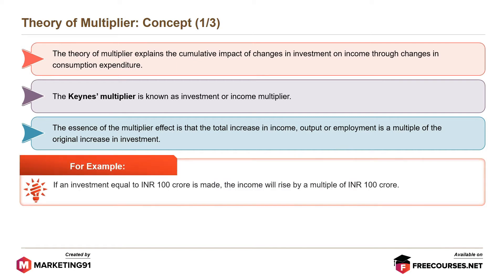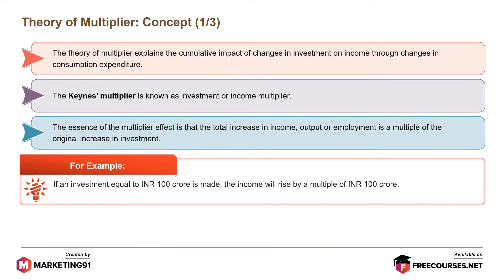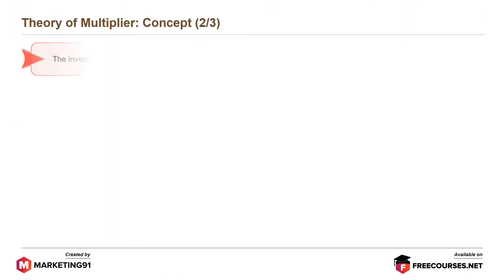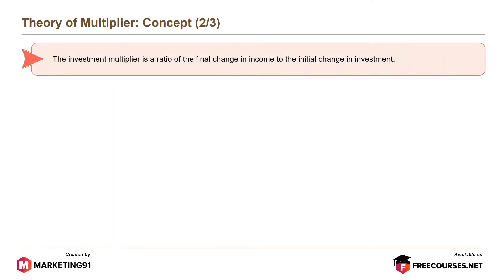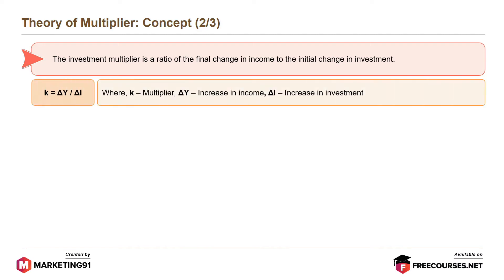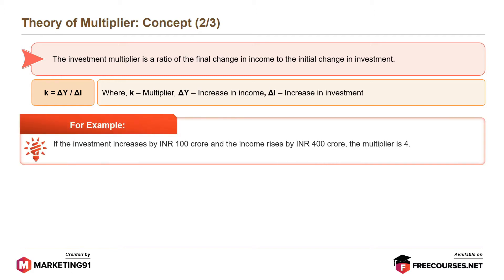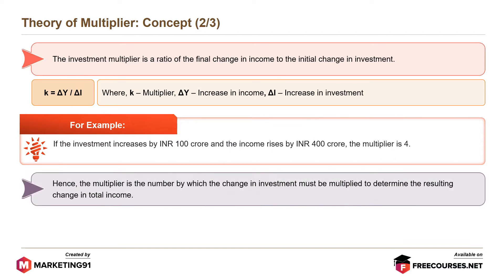For example, if an investment equal to Rs. 100 crore is made, the income will rise by a multiple of Rs. 100 crore. The investment multiplier is a ratio of the final change in income to the initial change in investment. It can be expressed as K equals delta Y divided by delta I, where K is the multiplier, delta Y is the increase in income, and delta I is the increase in investment. For example, if the investment increases by Rs. 100 crore and the income rises by Rs. 400 crore, then the multiplier is 4. Hence, the multiplier is the number by which the change in investment must be multiplied to determine the resulting change in total income.